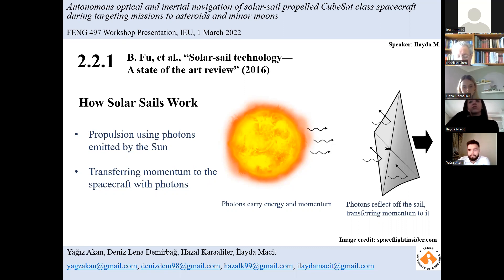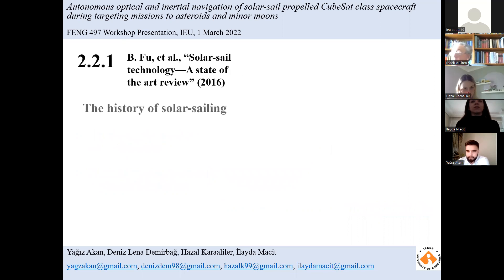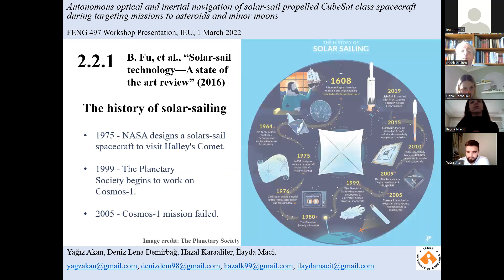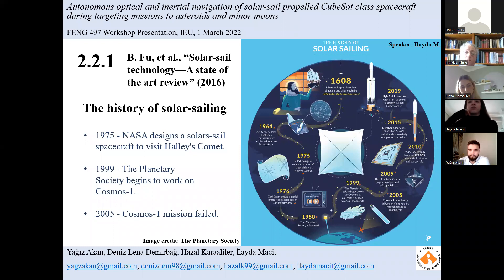In 1975, NASA designed the first solar sail spacecraft, intended for the Halley's Comet mission. The Planetary Society started working on solar sail spacecraft in 1999, and in 2005 the spacecraft called Cosmos 1 failed to reach orbit, so the mission failed.